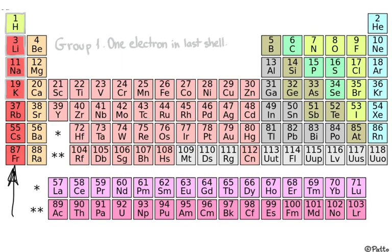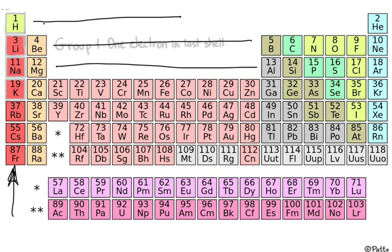If you remember your chemistry as well, the lines here represent the number of shells, so hydrogen and helium have one shell. Lithium, beryllium, carbon, nitrogen, oxygen — they have two shells. Sodium, magnesium, aluminum, silicon, phosphorus, sulfur, chloride — they contain three shells, and so on. This will be important for us as well in a while.